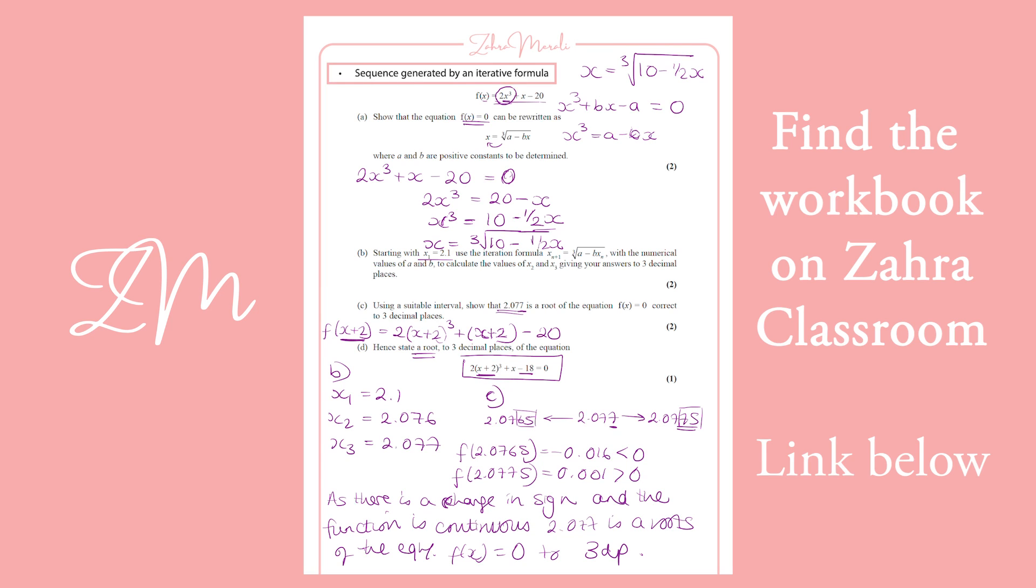So instead of one of your roots, which we found to be 2.077, we are going to minus 2, and our root would be 0.077.